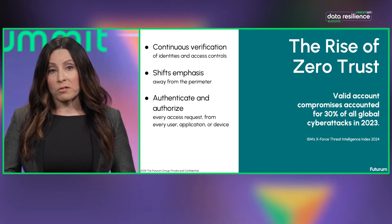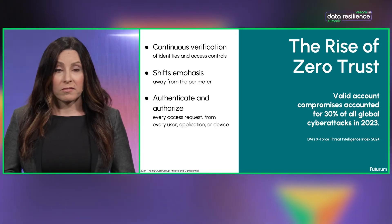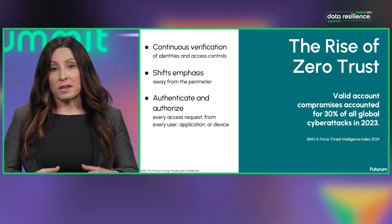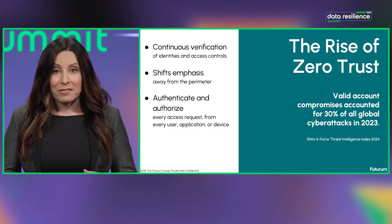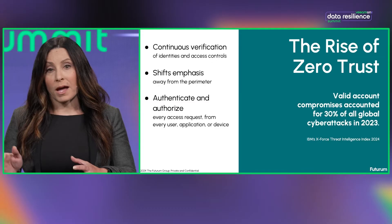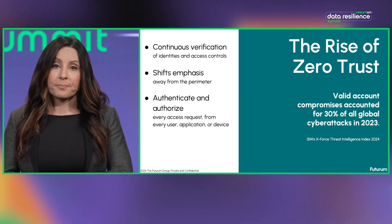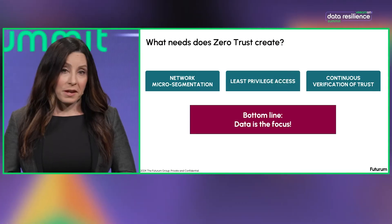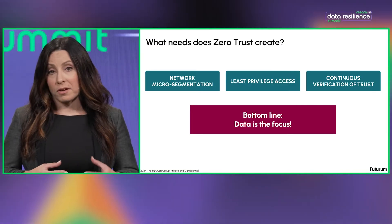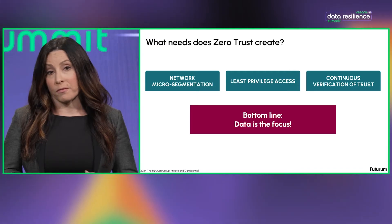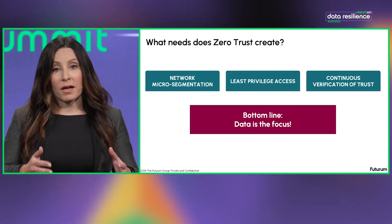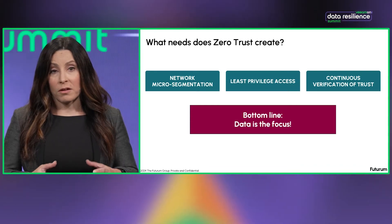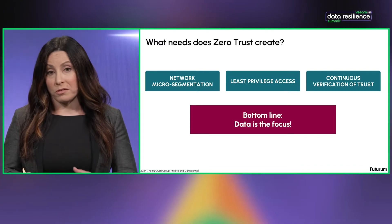Zero trust assumes that no device or user should be trusted for network access. The big change is the need to authenticate and authorize every access request from every user, application, or device. In addition, zero trust creates the need for micro-segmentation of the network, as well as the adoption of policies of least privilege access — providing access only to the data you need to do your job, when you need it.